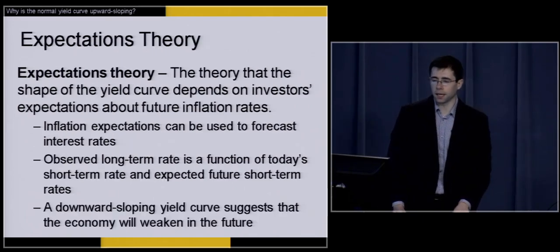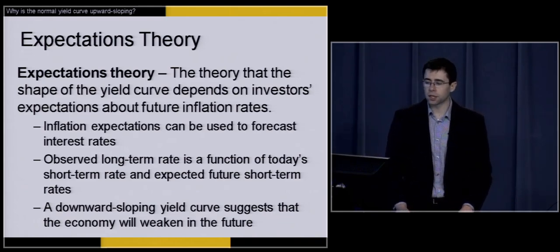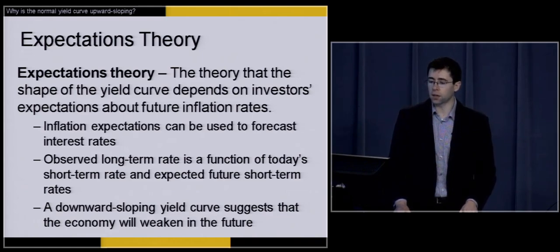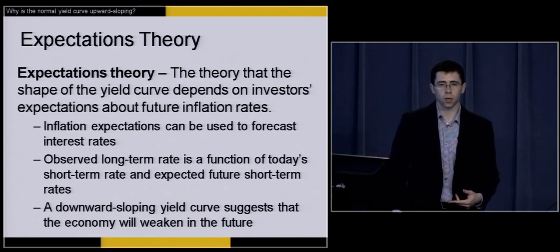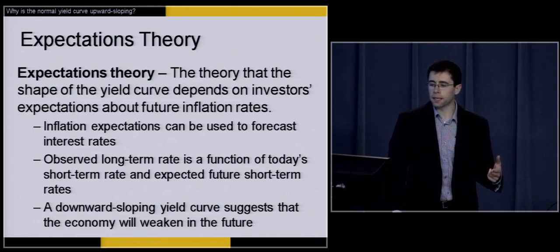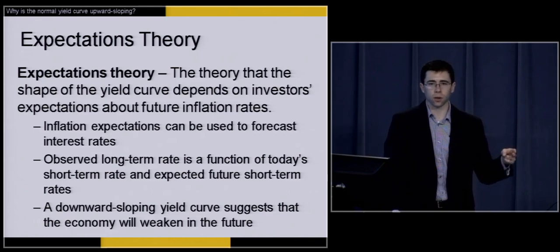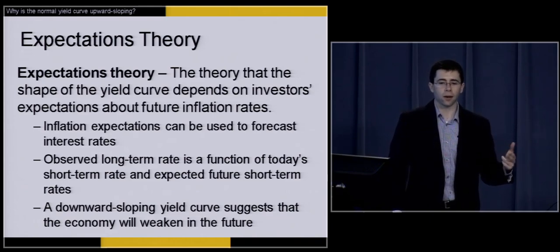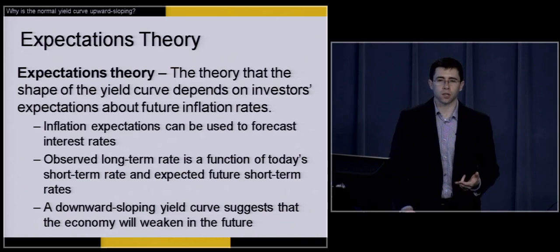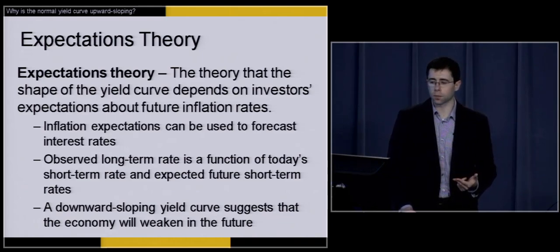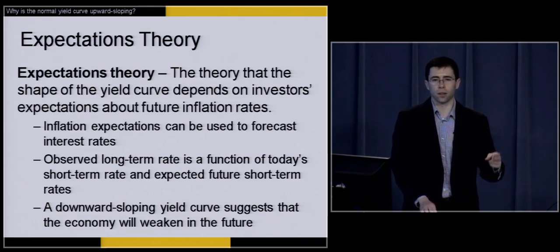The next theory explaining the yield curve is expectations theory. This says that the shape of the yield curve depends on investors' expectations about future inflation rates. If investors believe that inflation is going to be very high in the future — prices of goods increasing due to demand — we expect an upward-sloping yield curve. Investors demand higher interest rates to park their money in bonds with a longer time to maturity. Investors' expectations on inflation are driving a large portion of the yield curve or the difference in interest rates.